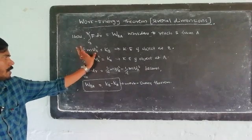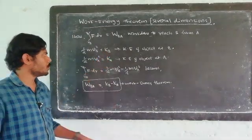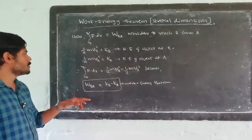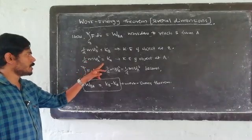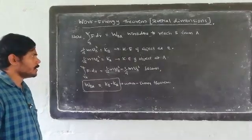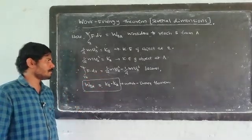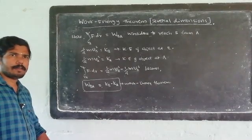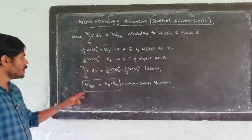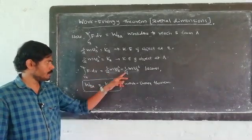The work done to reach B from A equals KB, the kinetic energy of the object at B, which is ½mvB² — the final kinetic energy. And ½mvA² is KA, the kinetic energy of the object at A, the initial kinetic energy. So the equation integral from R_A to R_B of F·dr = ½mvB² − ½mvA² gives us KB − KA.